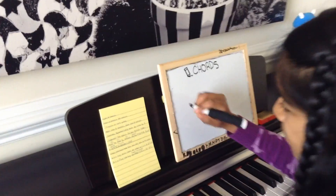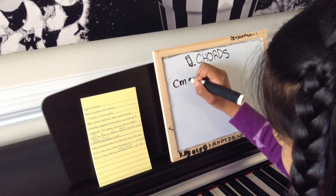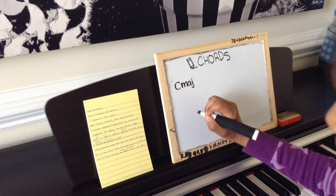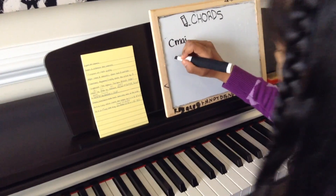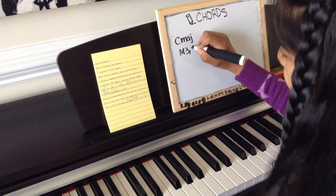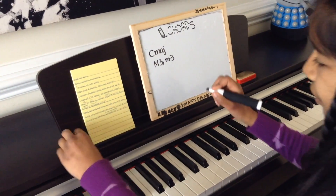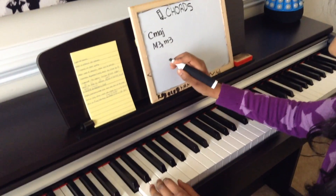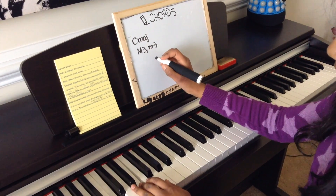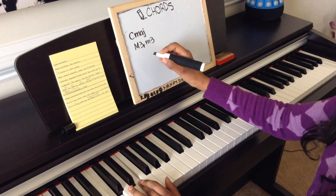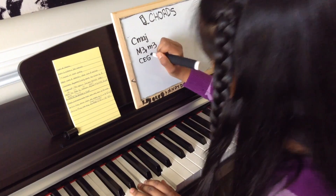Let's do a quick recap of the triads and their abbreviations. Starting with major: C major is a major third then a minor third. So for a C major chord you go from C up a major third to E, then up a minor third, giving you C, E, G.